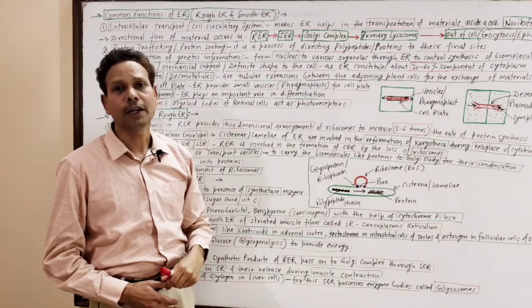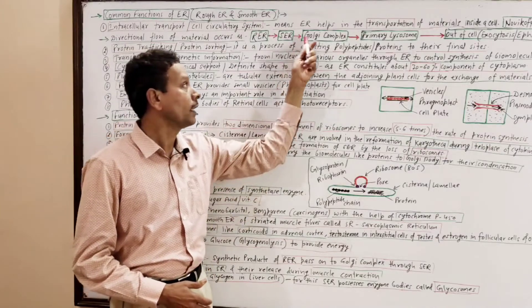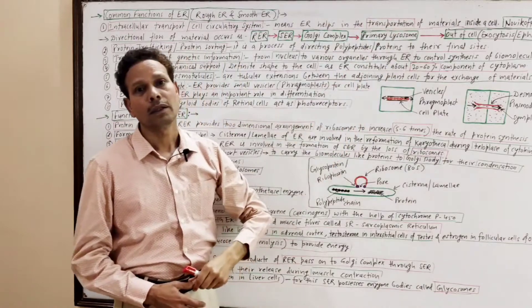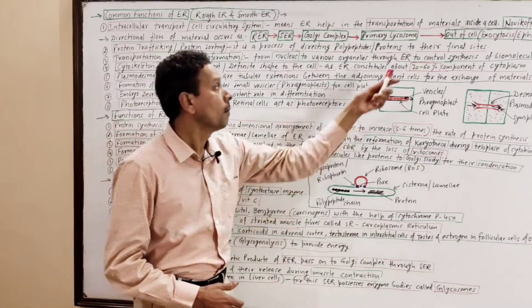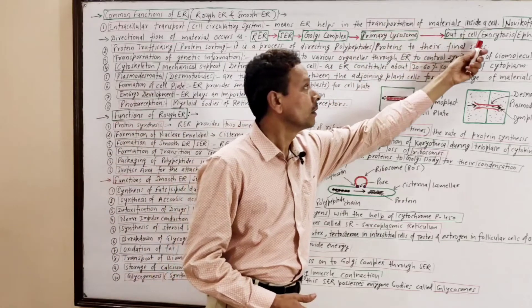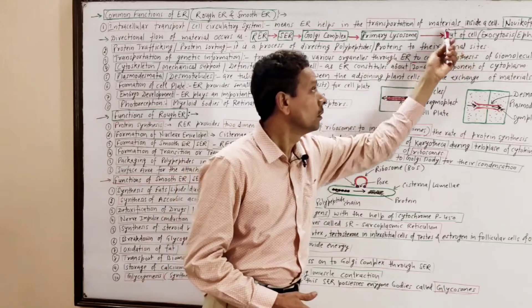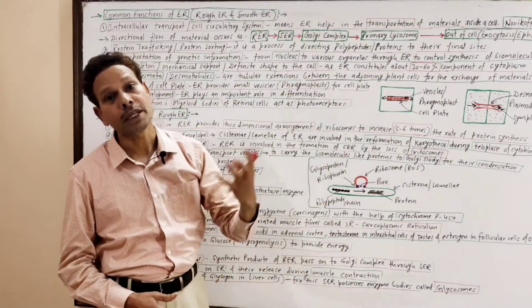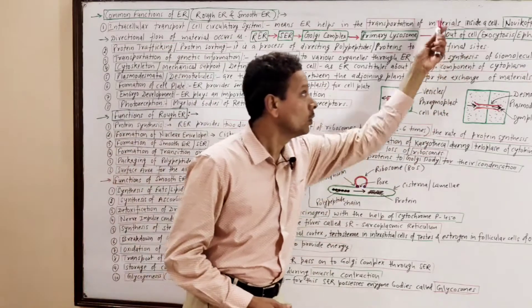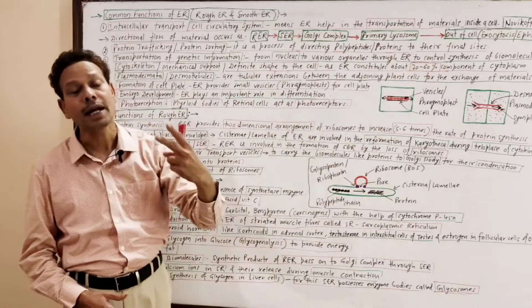The directional flow goes from Rough Endoplasmic Reticulum to Smooth Endoplasmic Reticulum, then to Golgi Complex, then through the Golgi Complex the intracellular material passes into primary lysosomes, and finally the waste products of a cell are removed through the process of exocytosis — cell vomiting. This is Novikov's directional flow of material inside the cell.